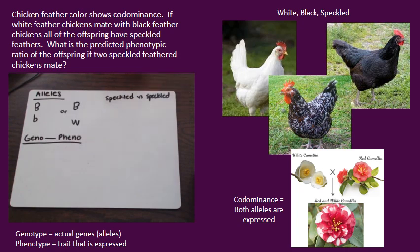Co-dominance is where both alleles are expressed. You can see this in this example here — I have white flowers and a pinkish-red flower. With co-dominance, both of those are expressed, so I have both white and red petals. We are going to be looking at this with chickens. We have white-feathered chickens and black-feathered chickens, and in the speckled version, both are expressed.